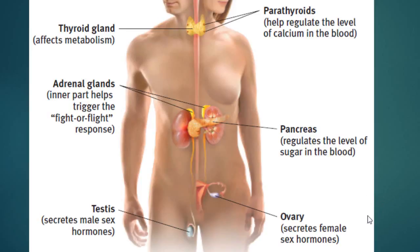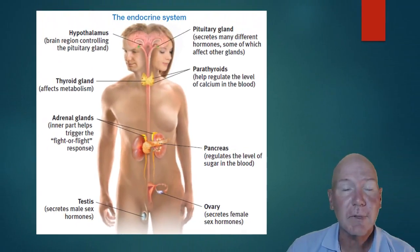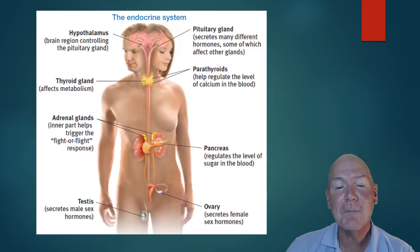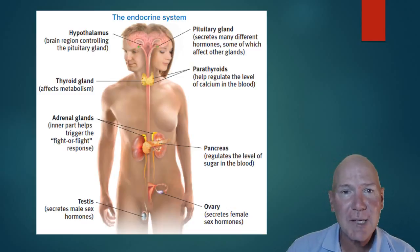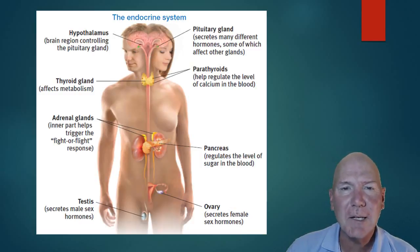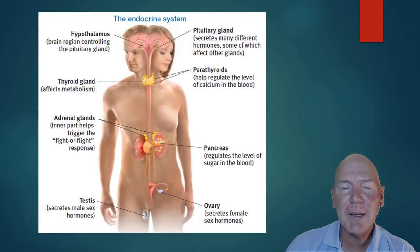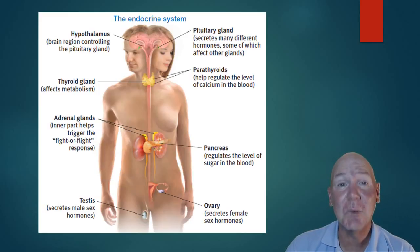Moving on to the gonads: in males, the testes secrete testosterone, the male sex hormone. In females, the ovaries secrete estrogen. Together, testes and ovaries are known as gonads — both sexes have gonads, just different types. That covers our nervous system and endocrine system. We'll look at how the brain is put together in the next video.